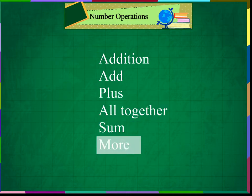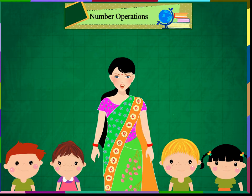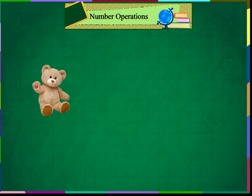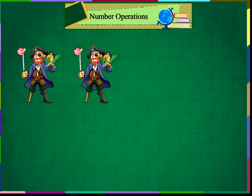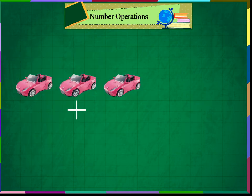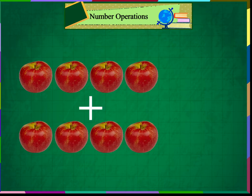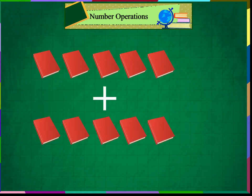Let us sing the addition song. Hip hip hip hip hooray! Let us do the addition sums today. Listen to me, look at what I see. We can do the sums today. 1 plus 1 teddy equals 2 teddies. 2 plus 2 equals 4. 3 plus 3 equals 6. 4 plus 4 equals 8. 5 plus 5 equals 10.